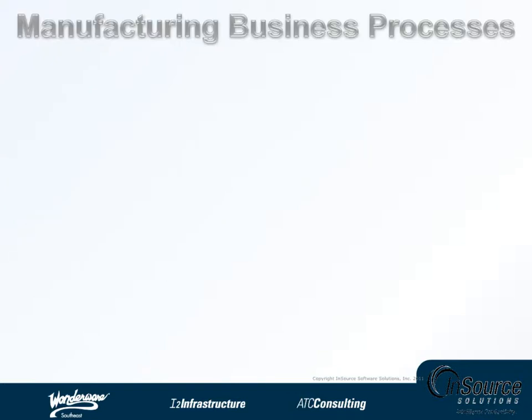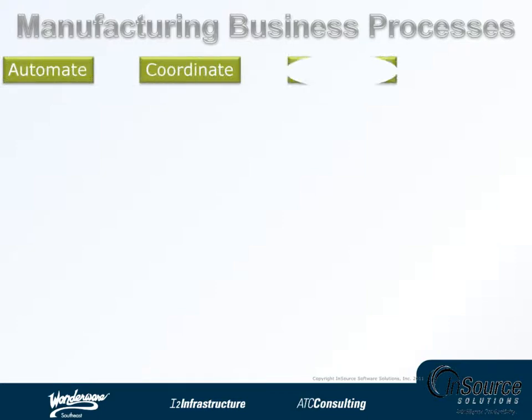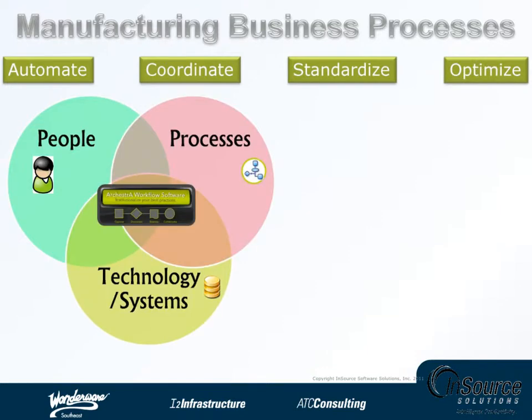Standardized work processes can be used to coordinate organizational or departmental activities and provide for the optimal level of automation to properly manage these processes in people and systems who carry them out.